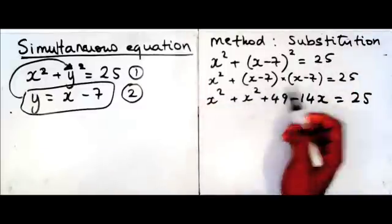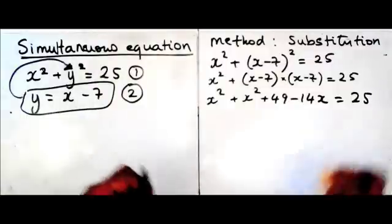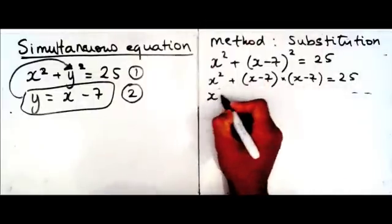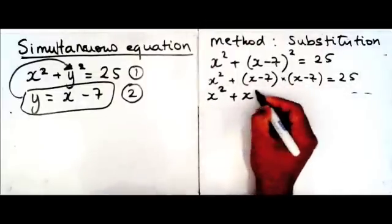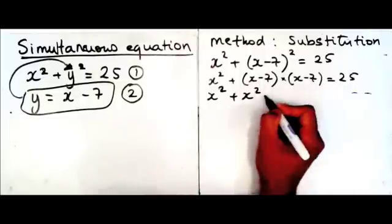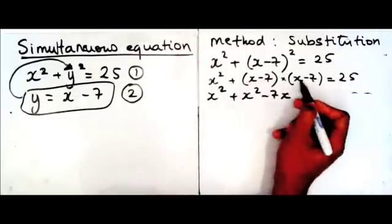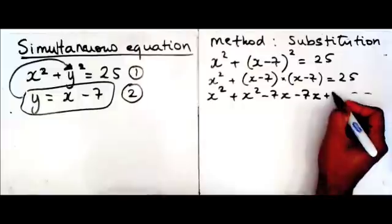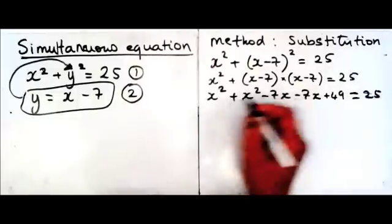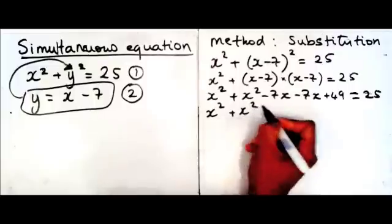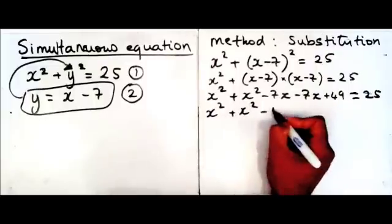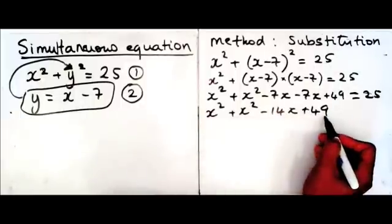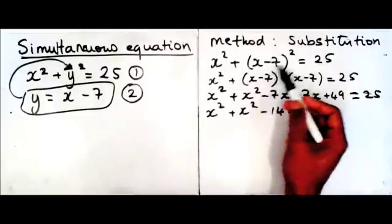If you don't understand that method, you can expand the bracket using FOIL: x times x equals x squared, x times minus 7 gives minus 7x, minus 7 times x gives minus 7x, and minus 7 times minus 7 gives plus 49, which equals 25. Simplifying, that gives x squared minus 14x plus 49 — the same answer as the quick method.